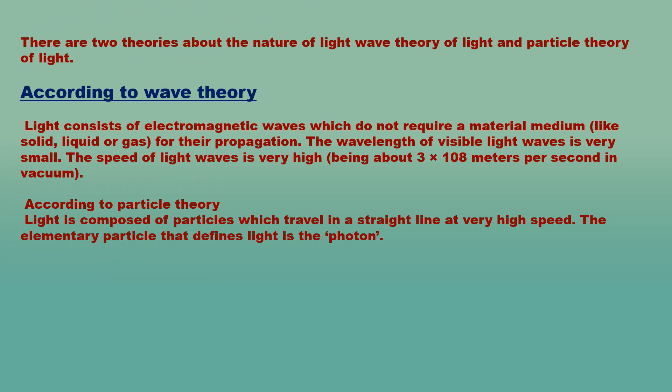There are two theories about the nature of light: wave theory and particle theory. According to wave theory, light consists of electromagnetic waves which do not require a material medium like solid, liquid, or gas for their propagation. The wavelength of visible light waves is very small and the speed of light waves is very high, being about 3×10⁸ meters per second in vacuum. According to particle theory, light is composed of particles which travel in a straight line at very high speed. The elementary particle that defines light is the photon.